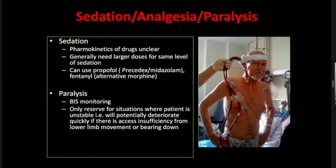Regarding analgesia and sedation on ECMO, pharmacokinetics are unclear as drugs pass through the extracorporeal circuit, but our experience is that patients generally need much higher doses for the same level of sedation. We tend to use shorter-acting agents such as propofol and fentanyl. When patients have high ventilatory needs or high respiratory drive, we use multiple agents. Patients with severe ARDS may be paralysed in the initial phase to achieve ultra-low lung-protective ventilation. Once stability is reached, we aim to take them off paralysis as soon as possible. Awake ECMO ambulation is something many centres are now doing, though it comes with logistic challenges.